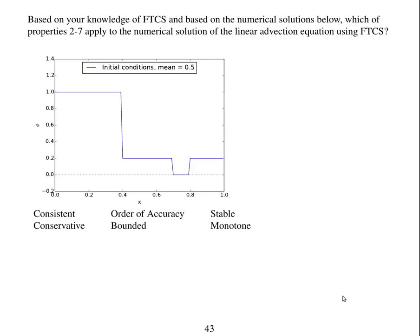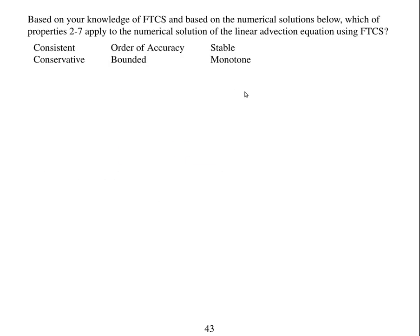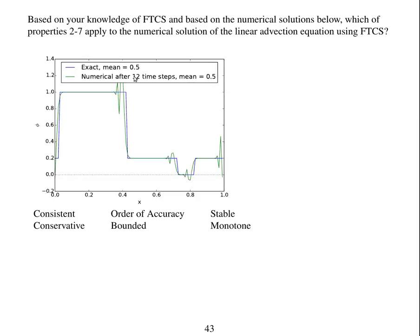So we're going to look at some numerical solutions and try to think what properties this scheme has. This is an advection of this square wave profile using the forward in time, centered in space advection scheme. Just by looking at the solutions, I want you to think about which properties this scheme might have. I've given you here the average, the mean quantity of phi over each time step. I'm going to start the simulation now.